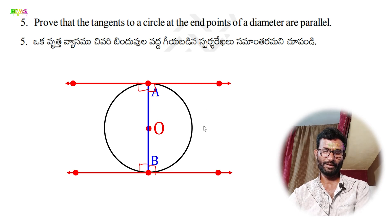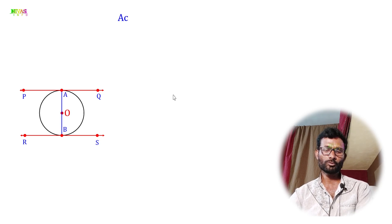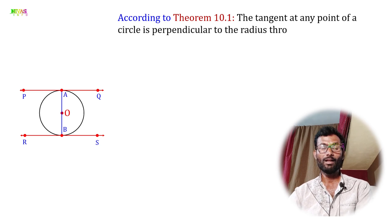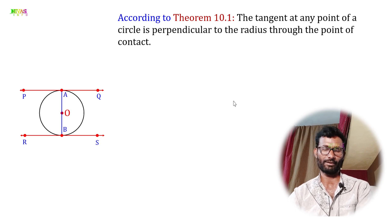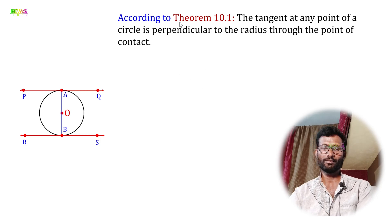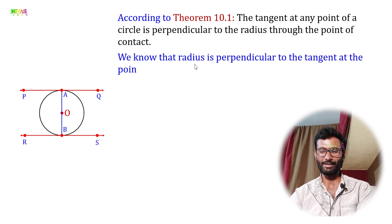We name the points: A and B are the endpoints of the diameter, O is the center, PQ is the tangent at A, and RS is the tangent at B. According to Theorem 10.1, the tangent at any point of a circle is perpendicular to the radius through the point of contact. So OA is perpendicular to PQ and OB is perpendicular to RS.